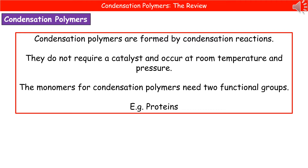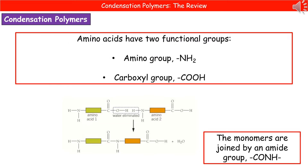A good example of this would be in our proteins, which are the amino acids joined together with their functional groups. Our amino acids have two functional groups: they've got the amino group, which is NH2, and the carboxyl group, COOH.